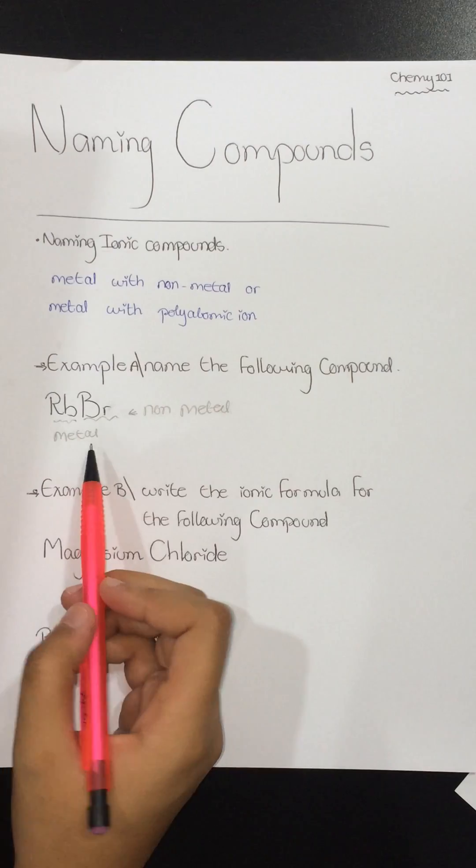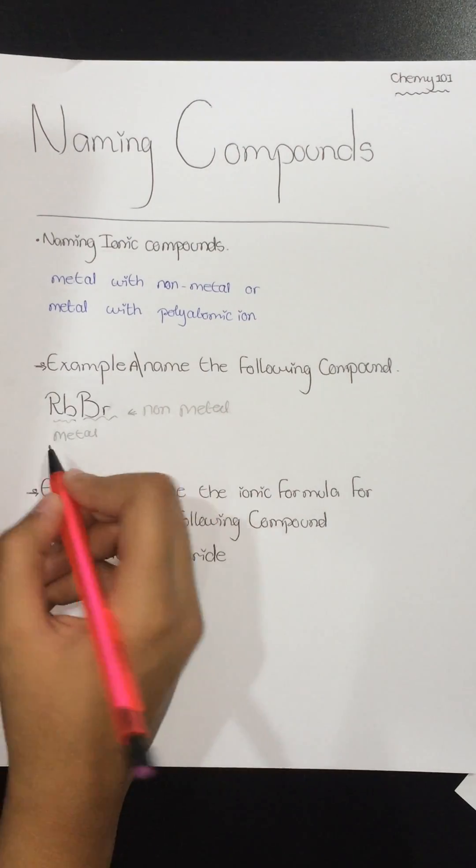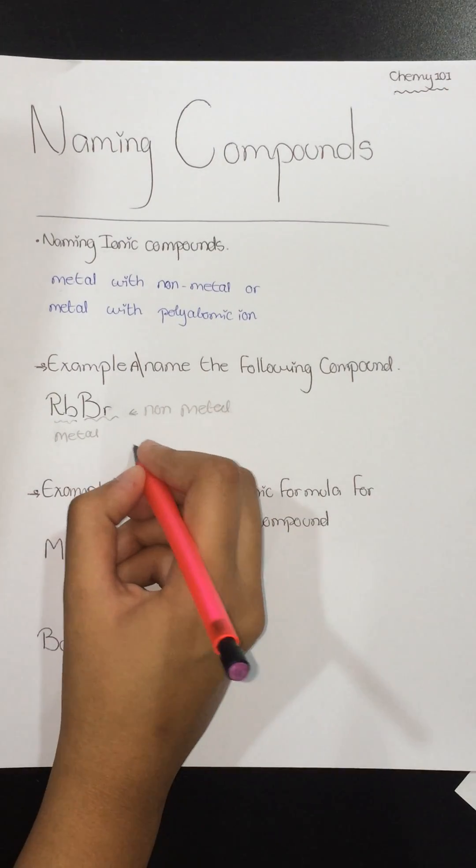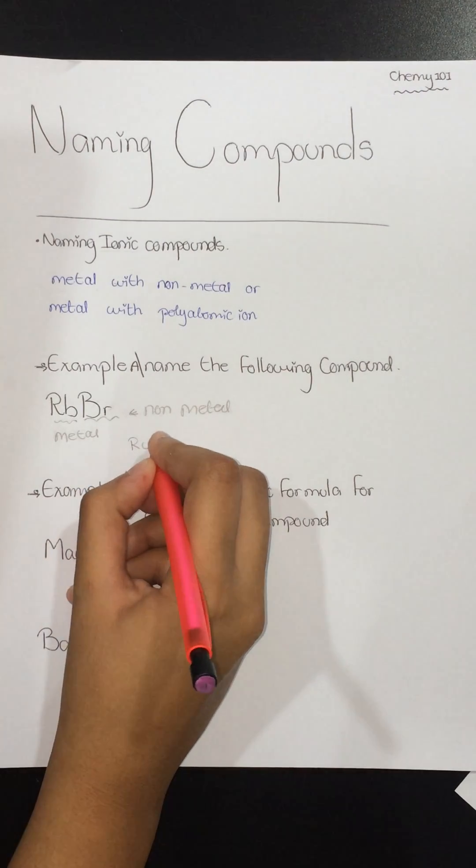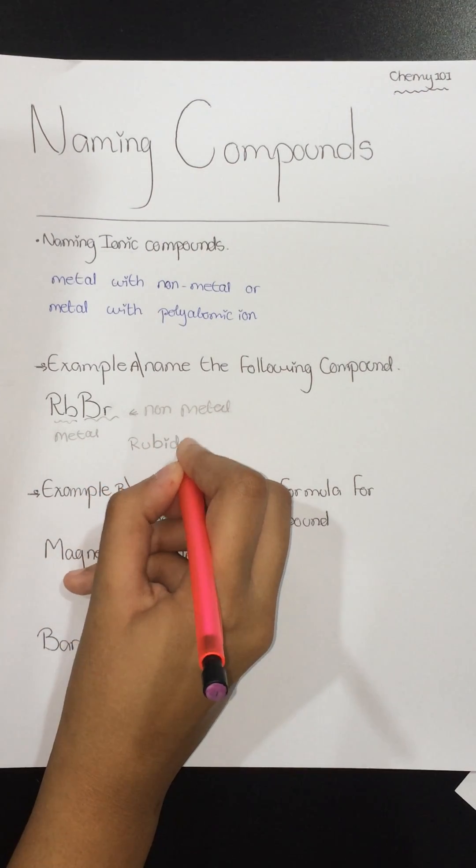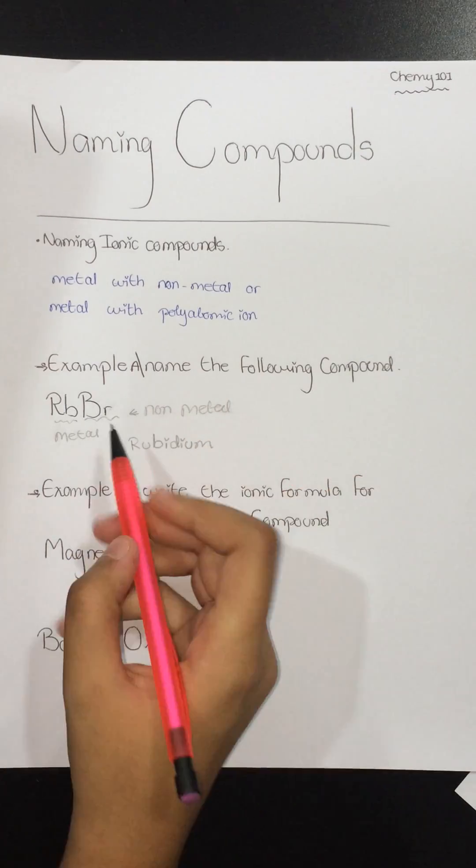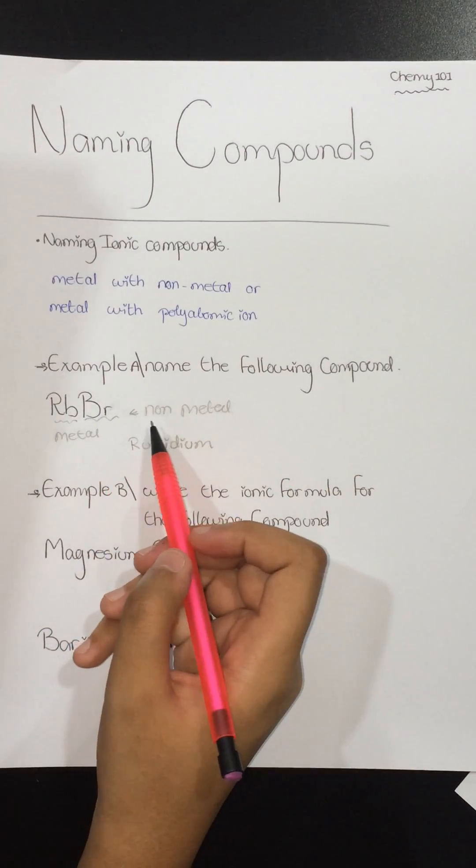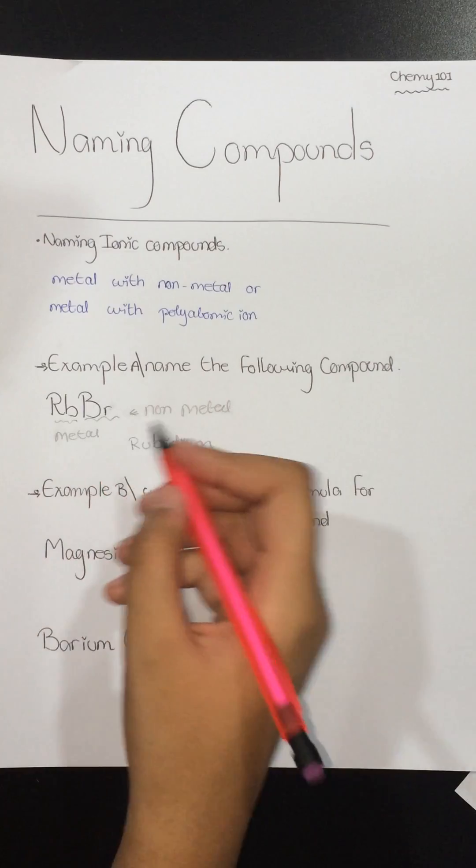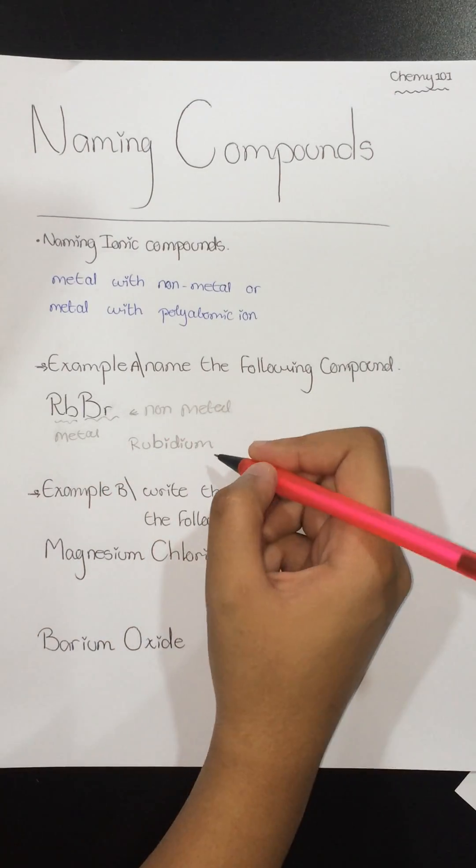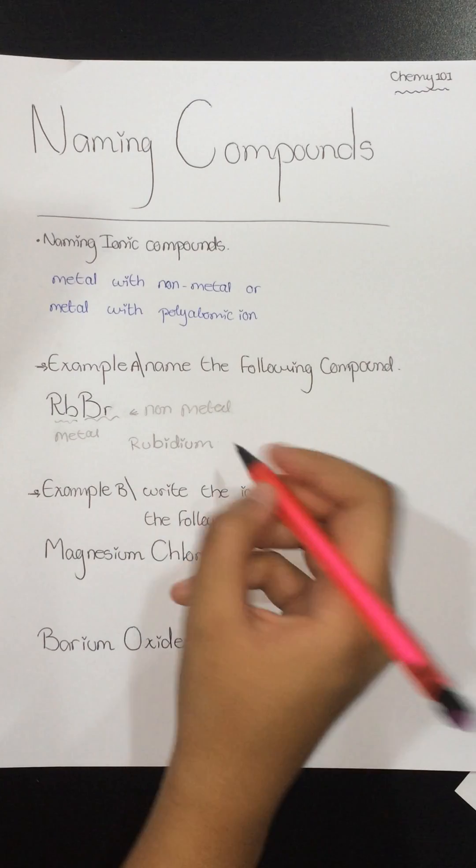So we write the metal first without making any changes: rubidium. Then we write the non-metal with 'ide' added at the end. Bromine becomes bromide, so rubidium bromide.